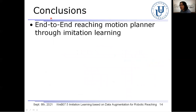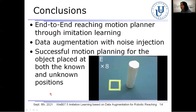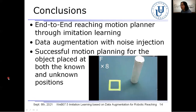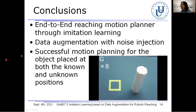In conclusion, we presented an end-to-end reaching motion planner based on two types of deep neural networks through imitation learning. For the problem of imitation learning, we applied data augmentation with noise injection. Through imitation learning with data augmentation, the robot based on the motion planner successfully reached the hand toward the object placed at both the known and unknown positions. These results show the effectiveness of the presented motion planner for the reaching problem. Thank you for your kind attention.